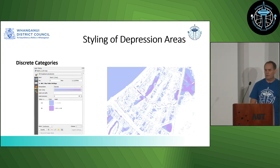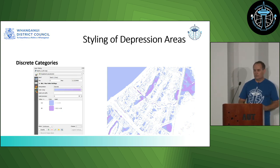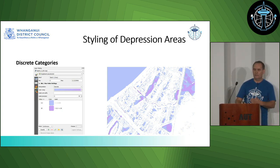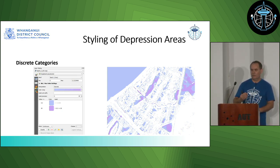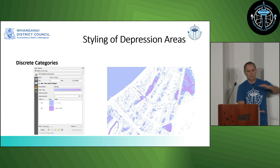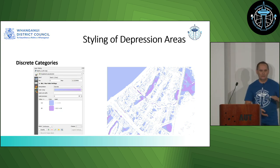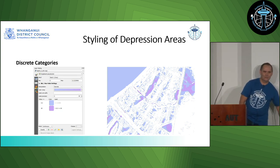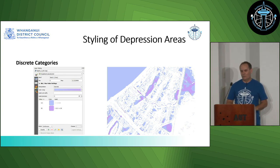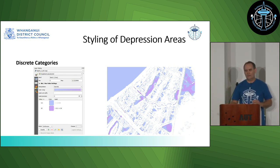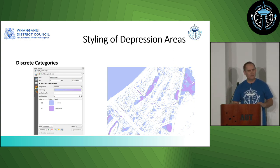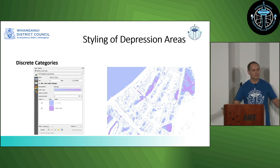One of the other styles we had split depression areas into two different categories: anything below 300 millimetres, and anything above 300 millimetres. Why? When you're building a house, generally the foundation is going to be above 300 mils. So we could look at something and say it's got a depression area, but it's not going to make much difference in terms of land development because it's actually quite a shallow depression.